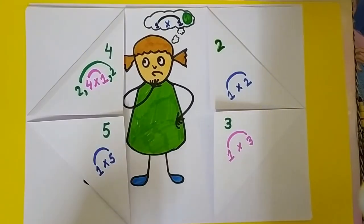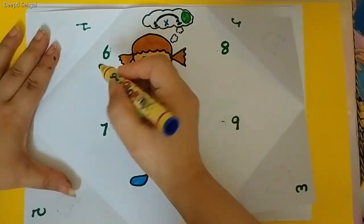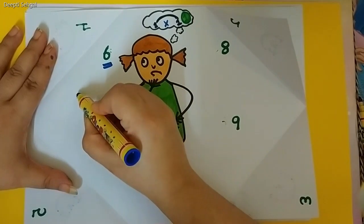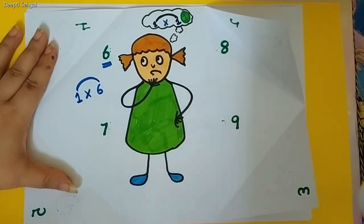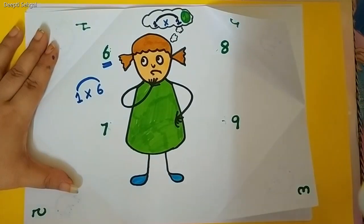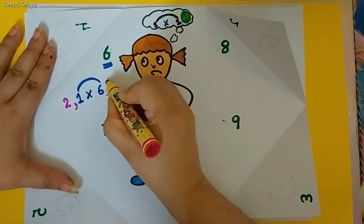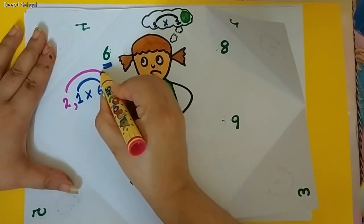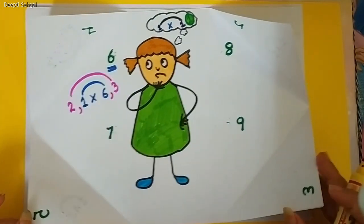Then, Chiku started thinking about the number 6. She quickly drew the rainbow. 1 multiply by 6. Right. And then, she thought, in the table of 2 also, we get 3. So, she quickly drew another line to her rainbow and she got to know that 6 is another lucky number for her.